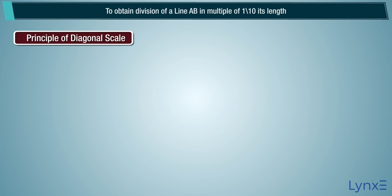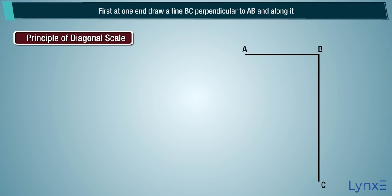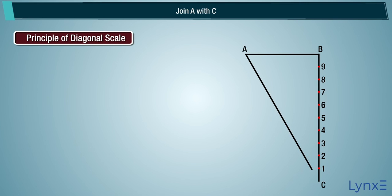To obtain division of a line AB in multiples of 1/10 of its length, first at one end draw a line BC perpendicular to AB and along it step off 10 equal divisions of any length. Number the division points and join A with C.